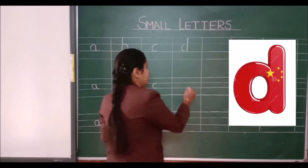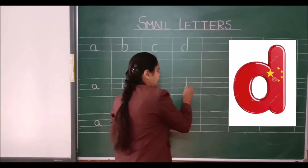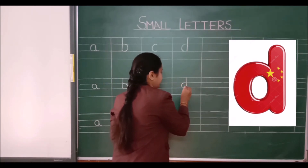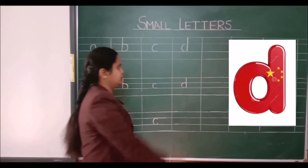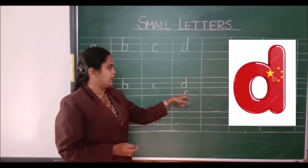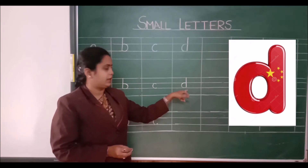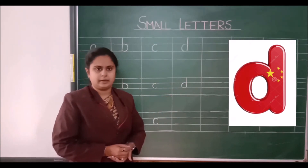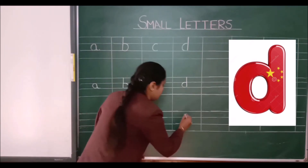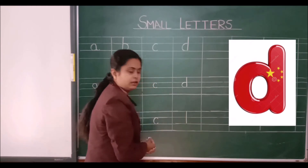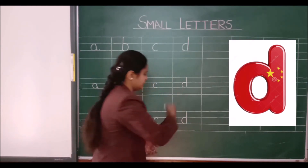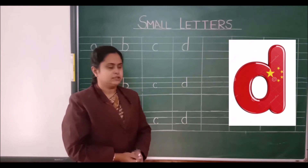See here, what you have to do — you have to make a standing line like this and you have to make a small curve like this. This is called small letter D.